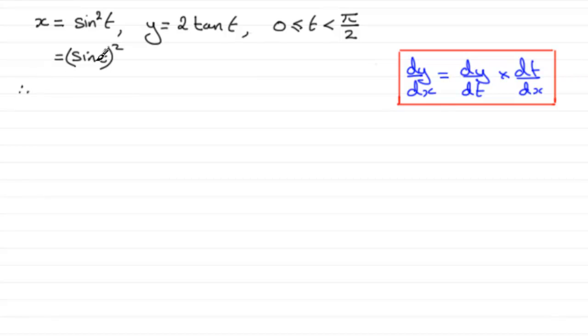If we use that, and I'm assuming you're familiar with that, dx/dt would be equal to 2 times sine t to the power 1, then we multiply this by the differential of sine t, which is cos t. So dx/dt is 2 sine t cos t.